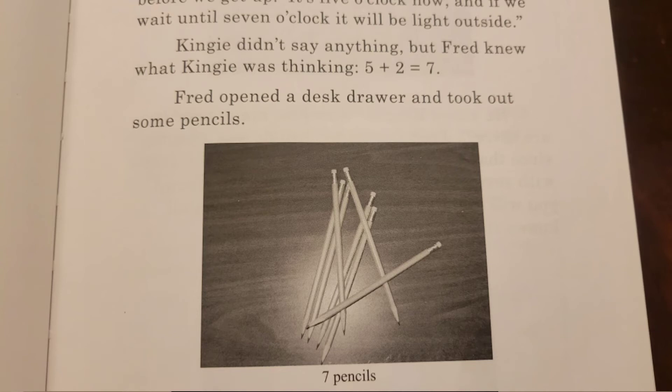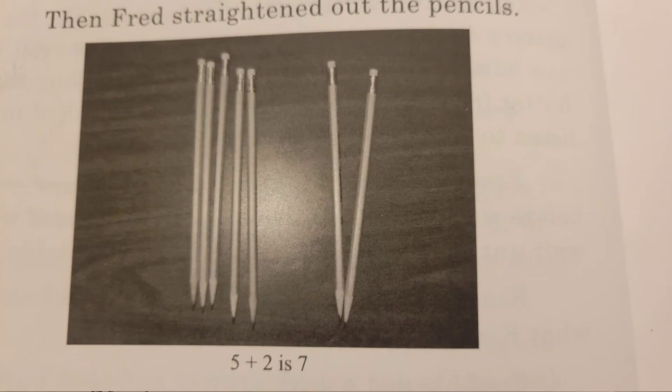Five plus two equals seven. Fred opened a desk drawer and took out some pencils. Kingy counted them. There were seven pencils. Fred had a very smart doll. Then Fred straightened out the pencils. Five plus two is seven.